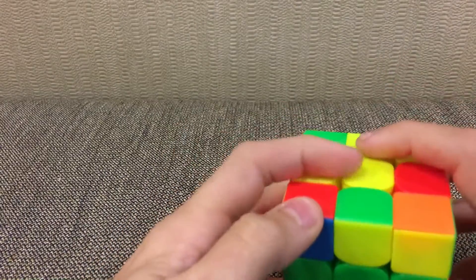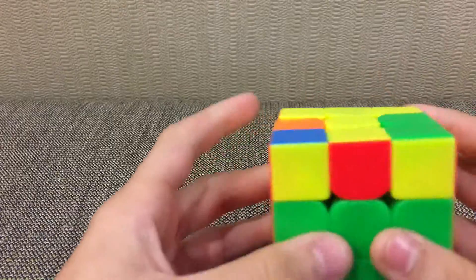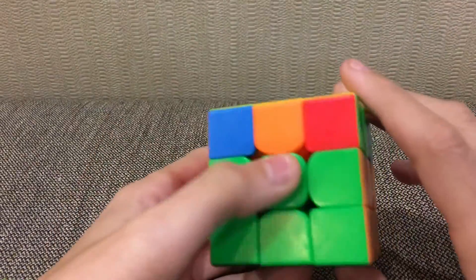Then I saw this. So U' F', L, U, L' U F, U F R U R' U' F'. Then I just had a GD perm.